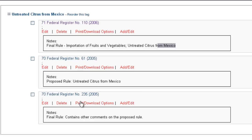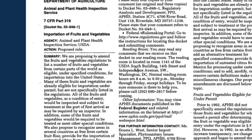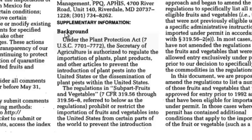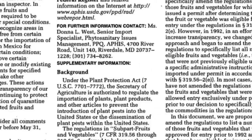We can search the Statutes at Large by the U.S. Code citation, or we could browse by the popular name of the public law. Where do we find this information? If we go to our proposed rule and start reading the preamble, under the background information it says: under the Plant Protection Act, 7 U.S.C. 7701. So here's the popular name of our public law — Plant Protection Act — and there's our U.S. Code citation. Knowing these two pieces of information, we can now go into the Statutes at Large library.